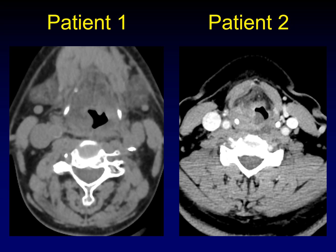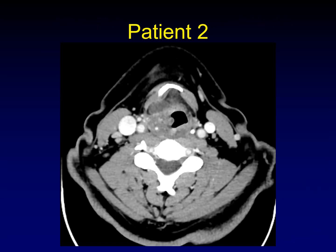Does that help to narrow down your differential? Here's another picture of patient two that might be helpful. You can see that in addition to the ill-defined enhancement throughout this lateral aspect of the larynx, you can also see a cystic area — a saccular cyst that accompanies the rest of this inflammation.